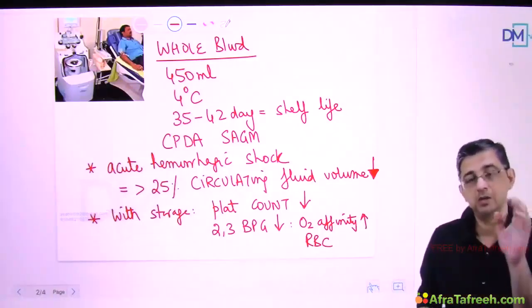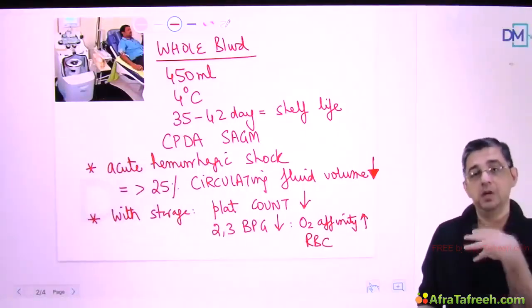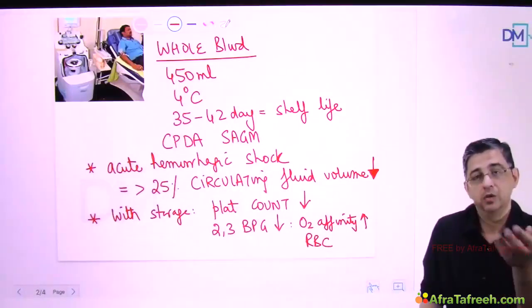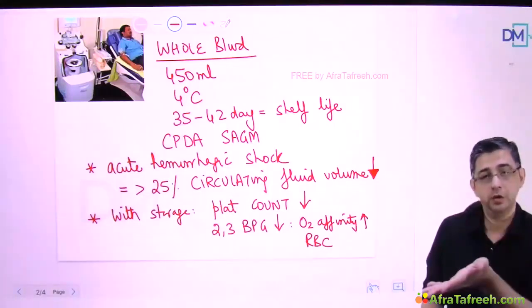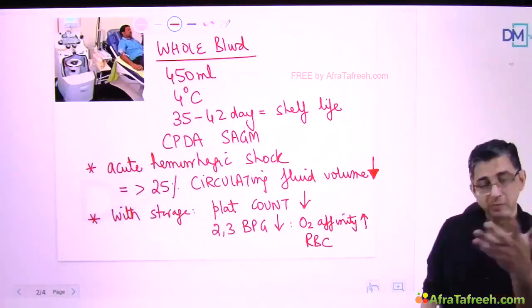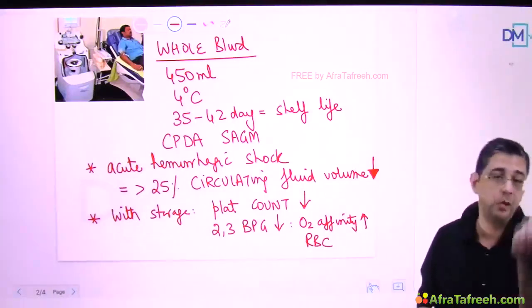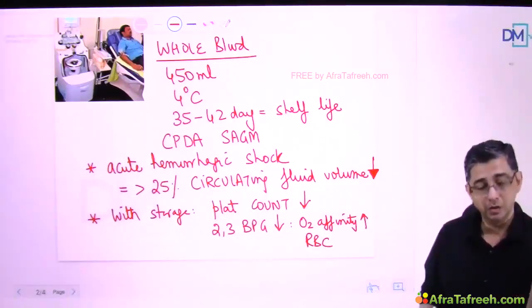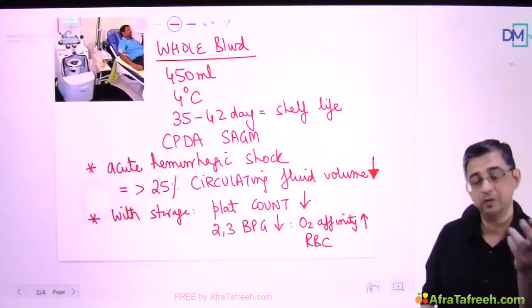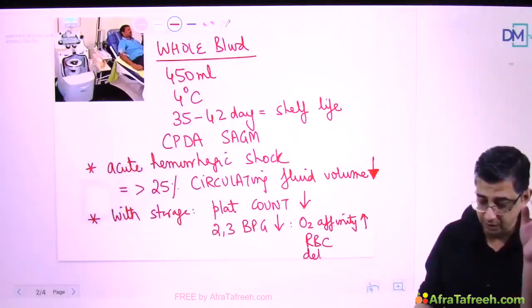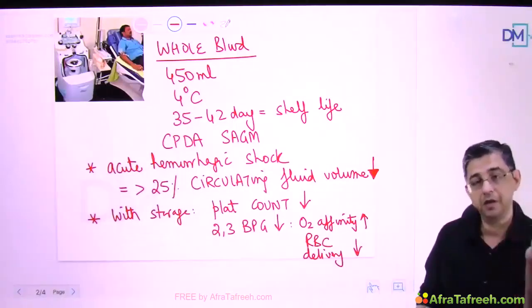I want the red blood cells to be in a donation mode - carrying oxygen and giving it to the tissues. If you give near-expiry blood, the RBCs keep all oxygen and don't give it to tissues - the purpose is not served. In fresh blood, values of 2,3-BPG are substantially high, so RBC oxygen affinity is lesser and they donate oxygen to tissues. As blood approaches expiry, oxygen affinity increases and delivery to tissues is substantially reduced. Affinity and delivery are inversely related.